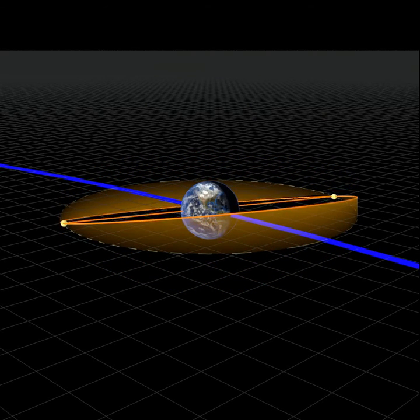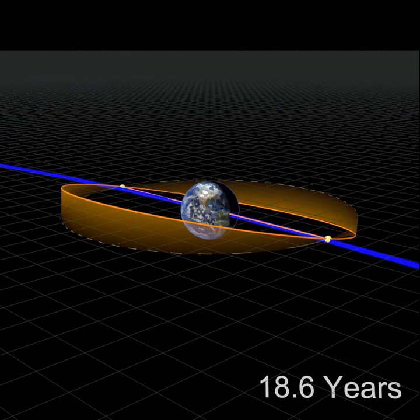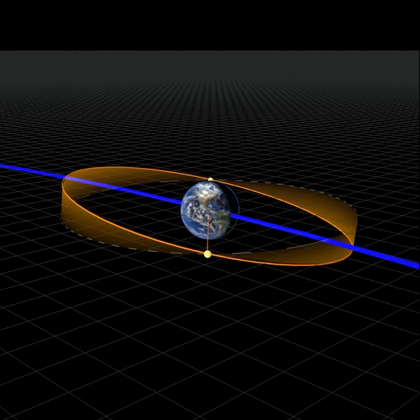Now because of this, it changes when we have eclipses. We should have them every six months. Instead, they're off by a little bit every year.